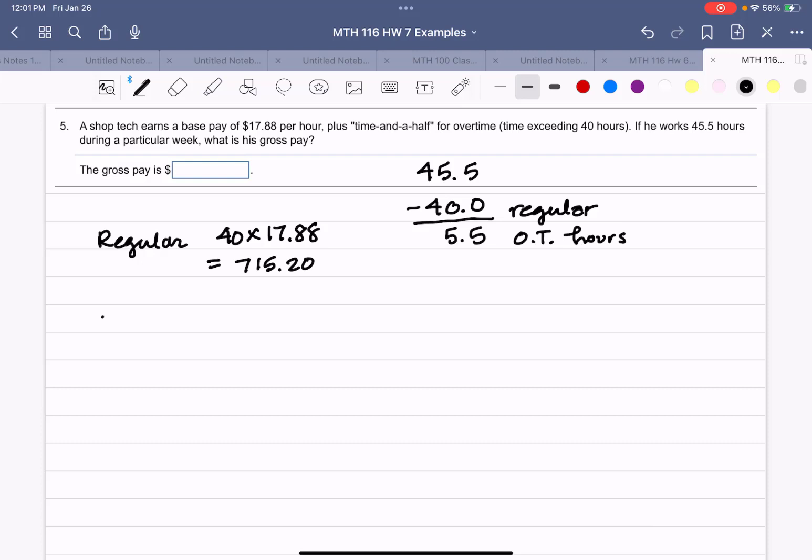Now for the overtime, we've got to take our $17.88 and multiply that times 1.5. That's time and a half. So the new hourly rate is $26.82.